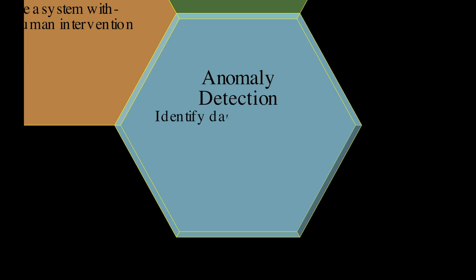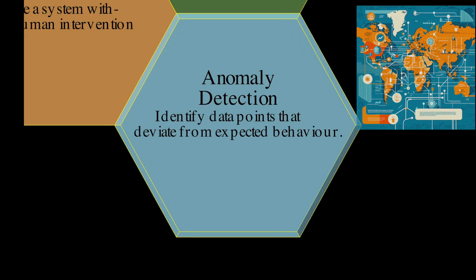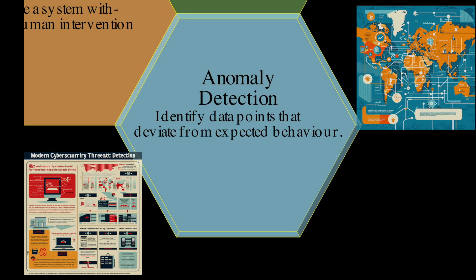Anomaly detection identifies data points that deviate from expected behavior. It's crucial in spotting market manipulation in finance, flagging suspicious trading patterns, fraud or money laundering. In cyber security, it detects threats by identifying unusual network activity or user behavior.